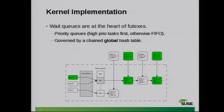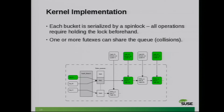Each of these Futex queues represents a single blocked process. You will have different amounts of Futexes hashing into the same bucket. The actual heart of Futexes is in the wait queues. The queues are priority-based — higher priorities are always woken up first; otherwise it's just FIFO ordering. To add or remove yourself from the list, you need serialization, particularly when two or more tasks are trying to work on the same Futex. This is serialized by a spin lock, and that spin lock can have a lot to say when it comes to performance bottlenecks.